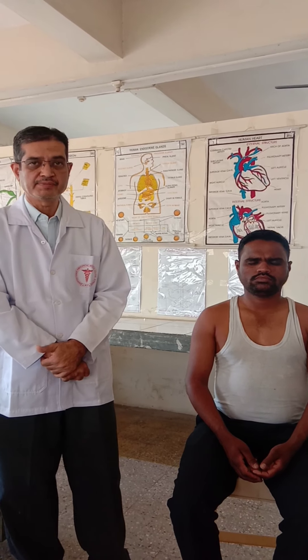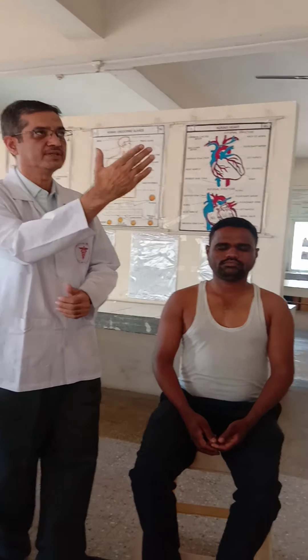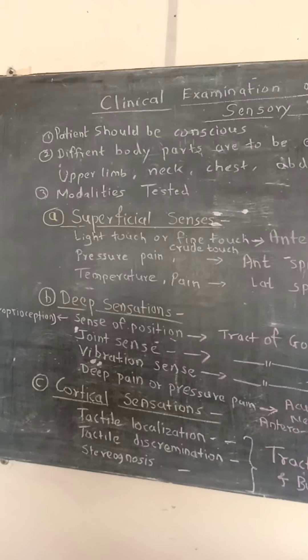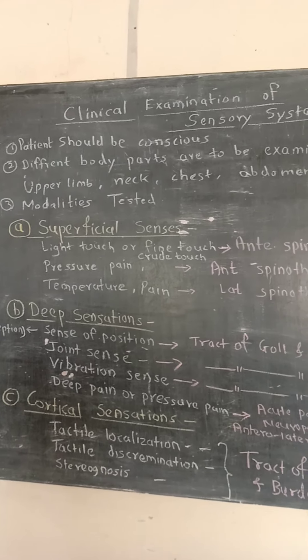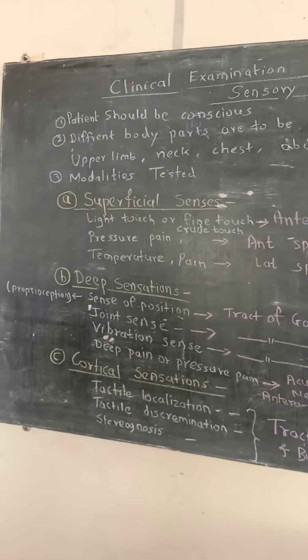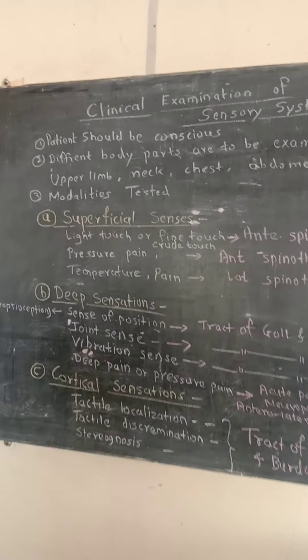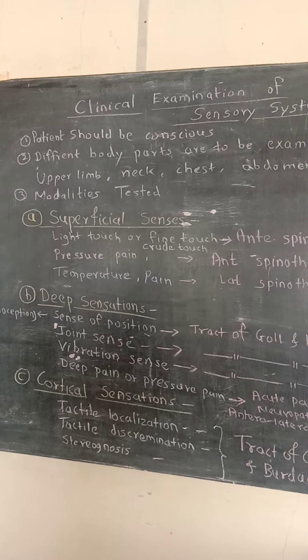Today we are going to discuss one more practical point of view, that is clinical examination of a sensory system. For this clinical examination, one basic rule is that the patient should be conscious. We are going to examine different body parts such as upper limb, neck, chest, abdomen, lower limb, and back.